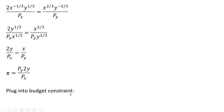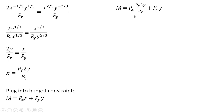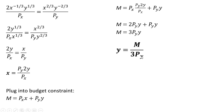We take this expression for x and plug it into the budget constraint. Making that substitution, the price of good x cancels. Adding up the terms on the right-hand side and dividing through by three times the price of good y gives us the consumer's demand for good y.